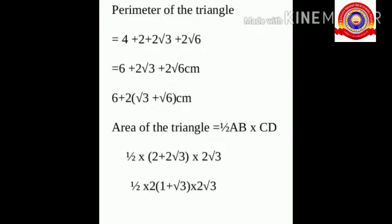Hence, the perimeter of the triangle is equal to 4 plus 2 plus 2 root 3 plus 2 root 6, which is equal to 6 plus 2 root 3 plus 2 root 6. Taking 2 as common outside: 2 into (3 plus root 3 plus root 6) centimeters.